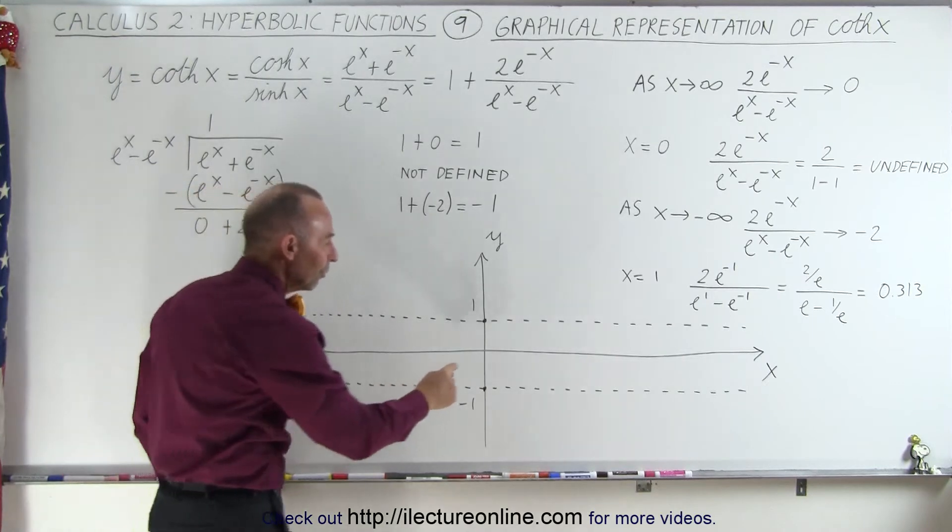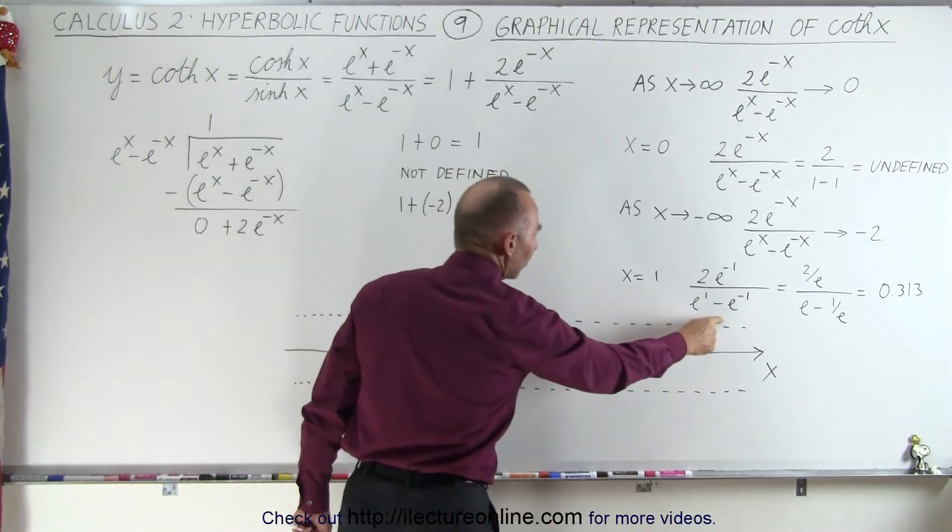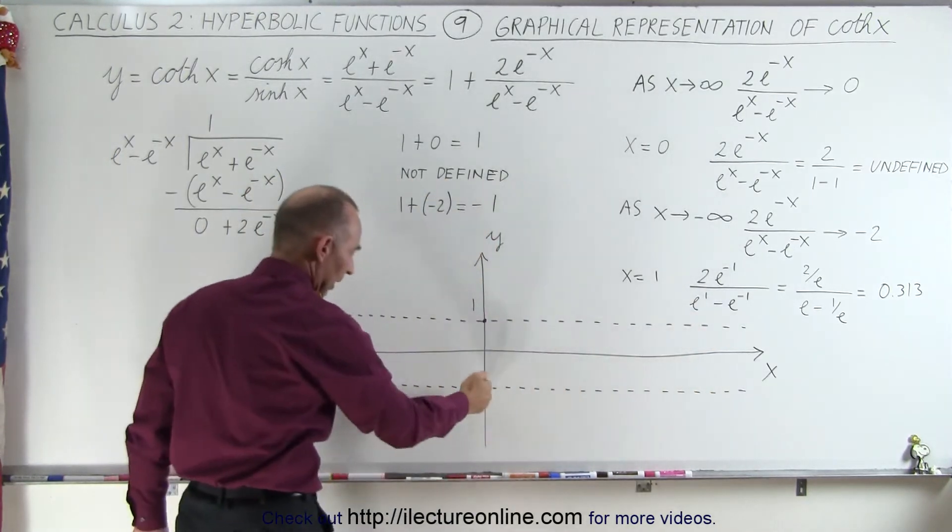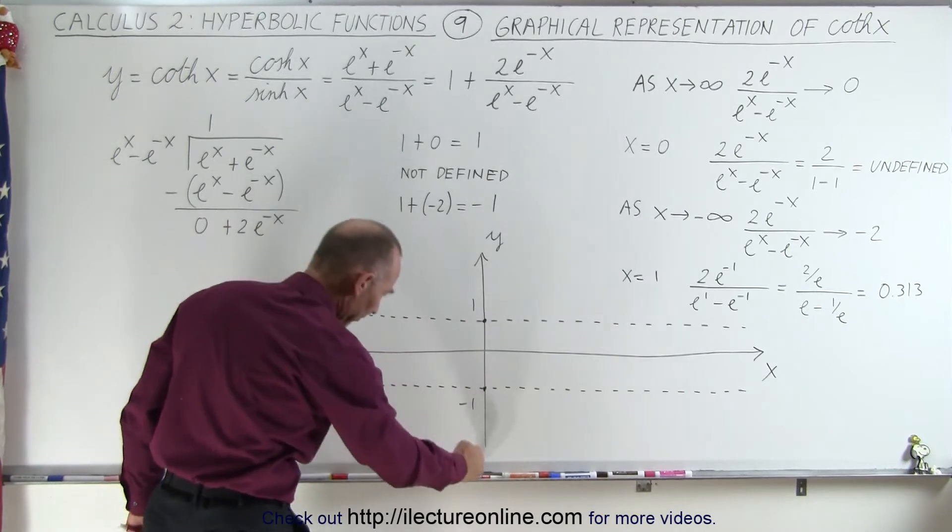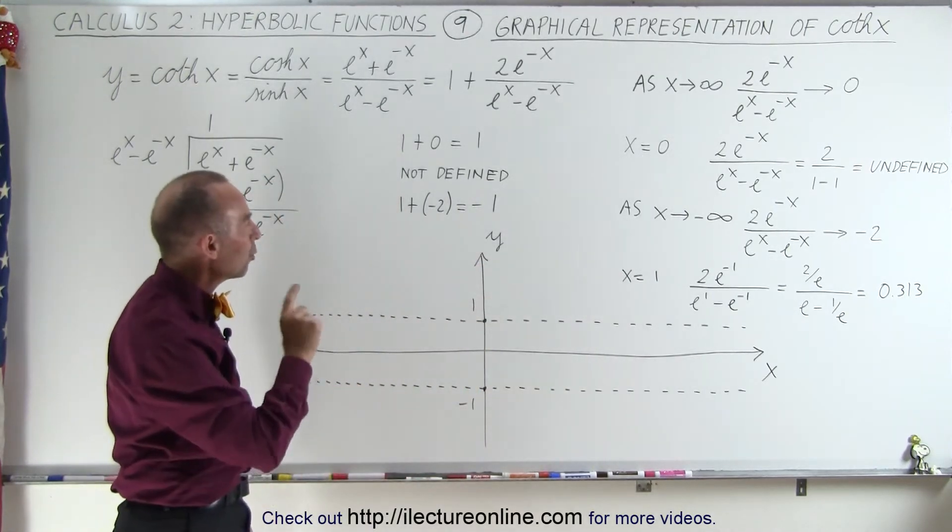Since the value is not defined at this point, and we know that it's positive 1 to the right and negative 1 to the left, we expect a curve that will look like this. But just to make sure, we're going to evaluate it at one more spot.